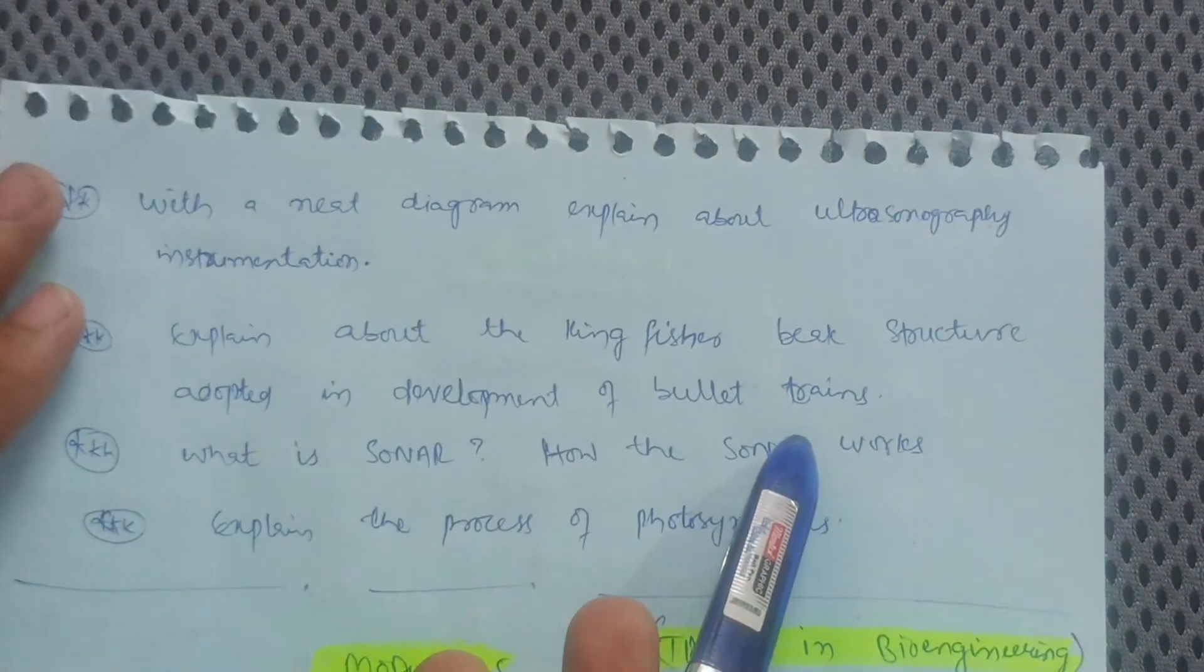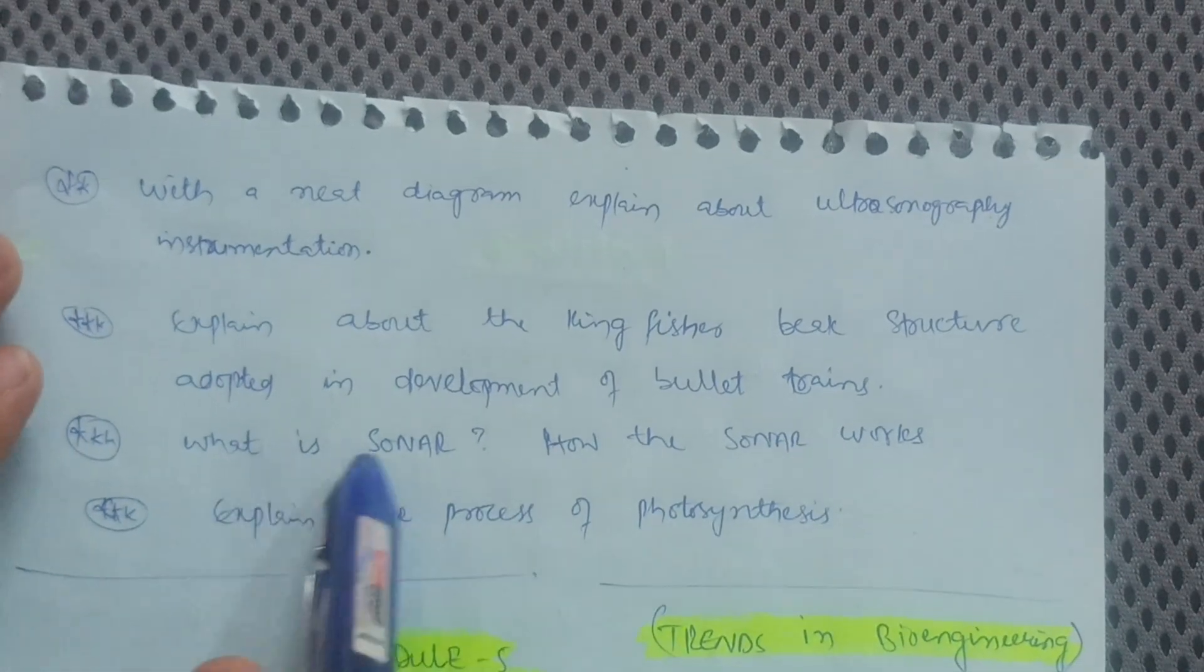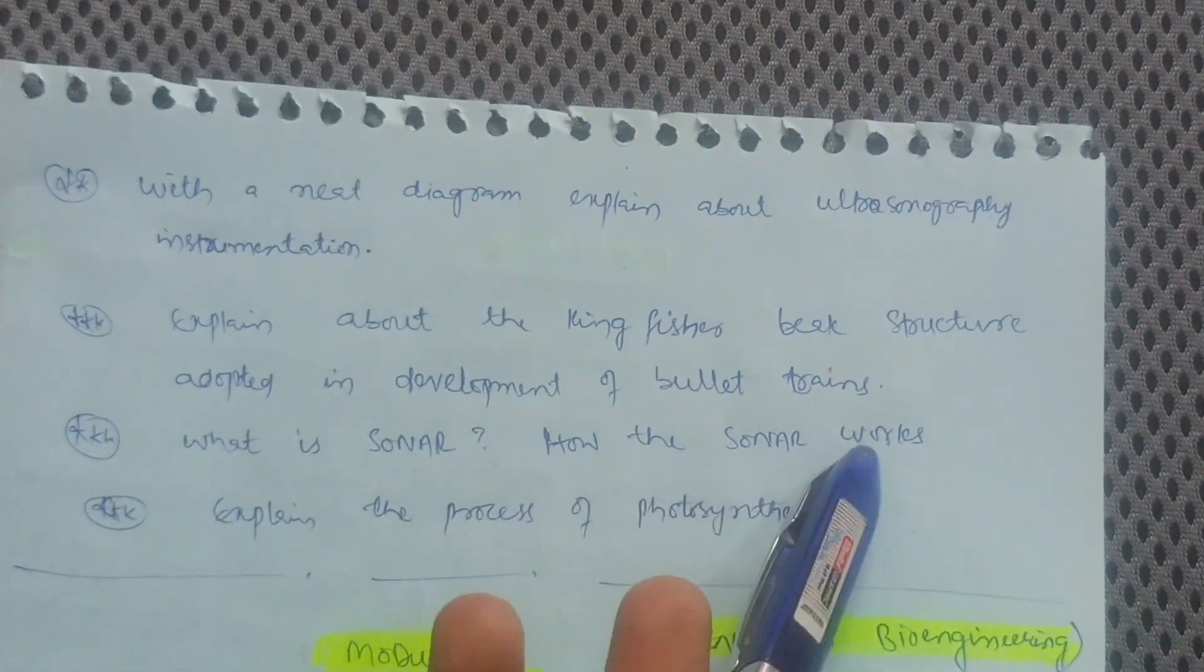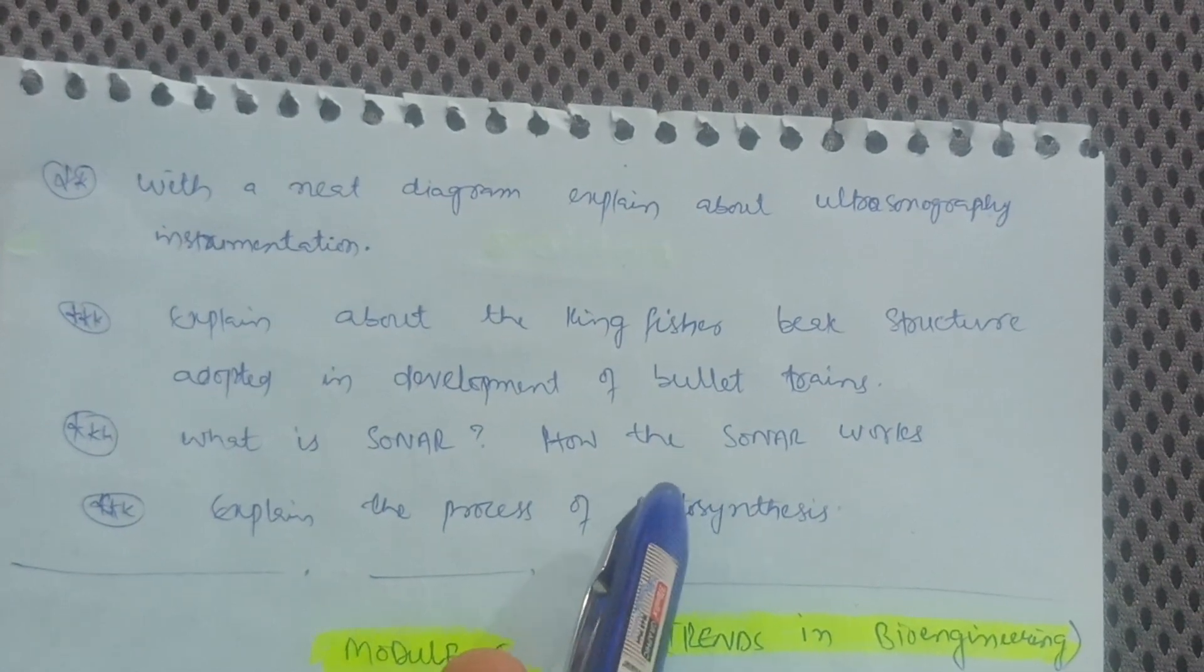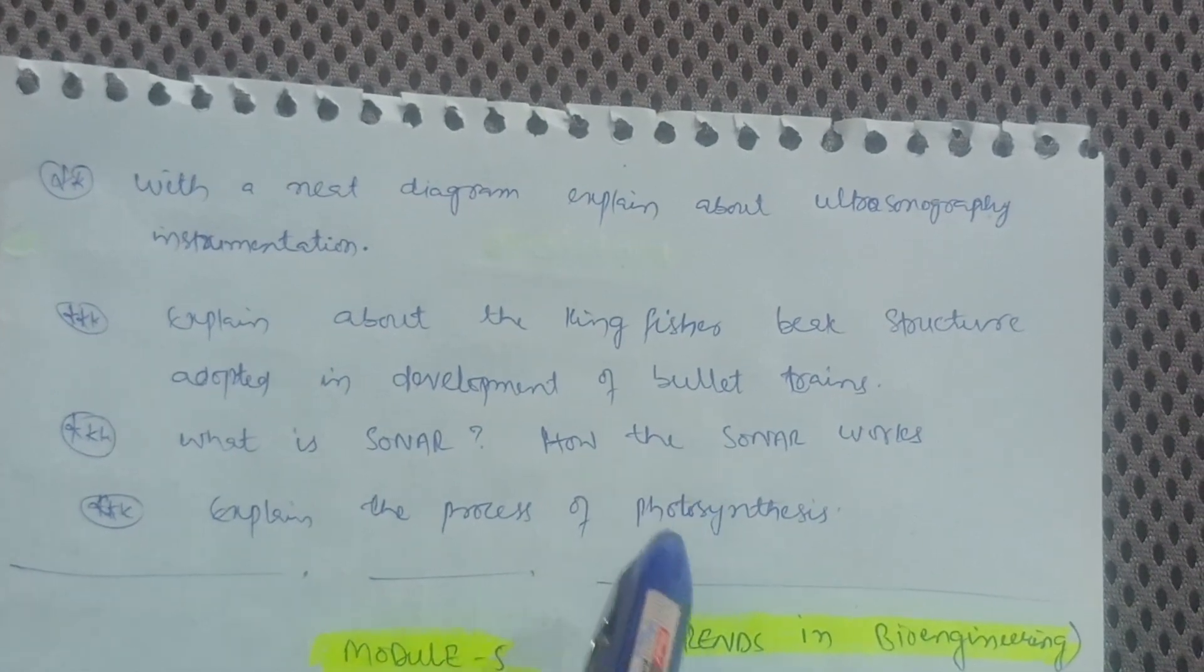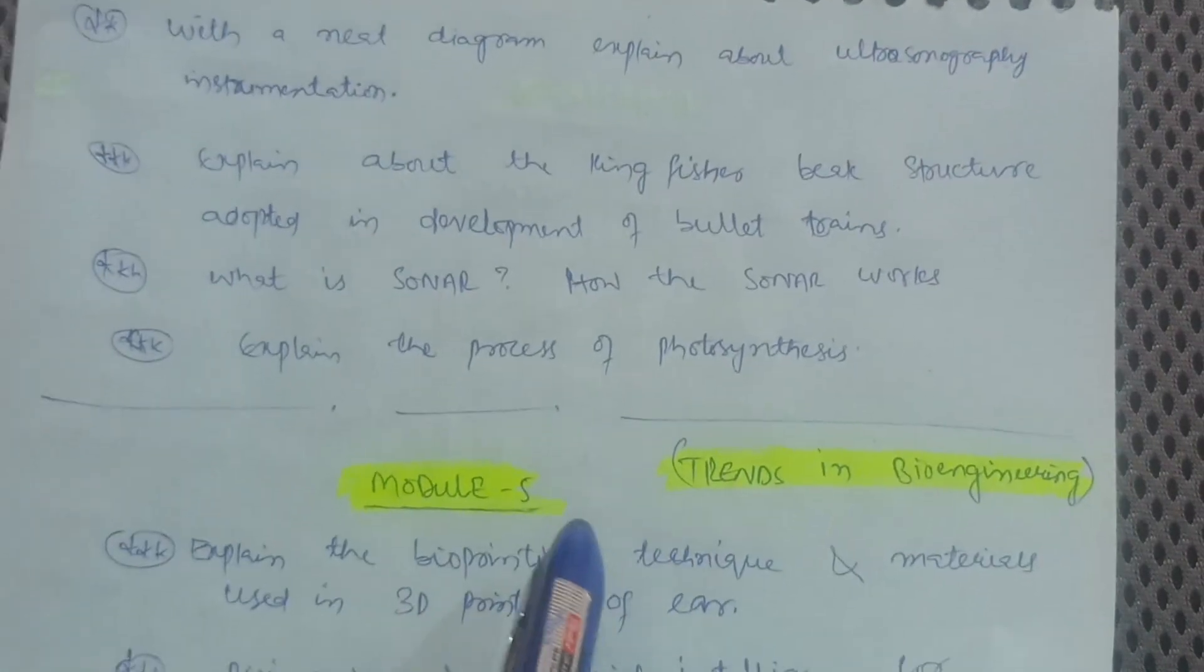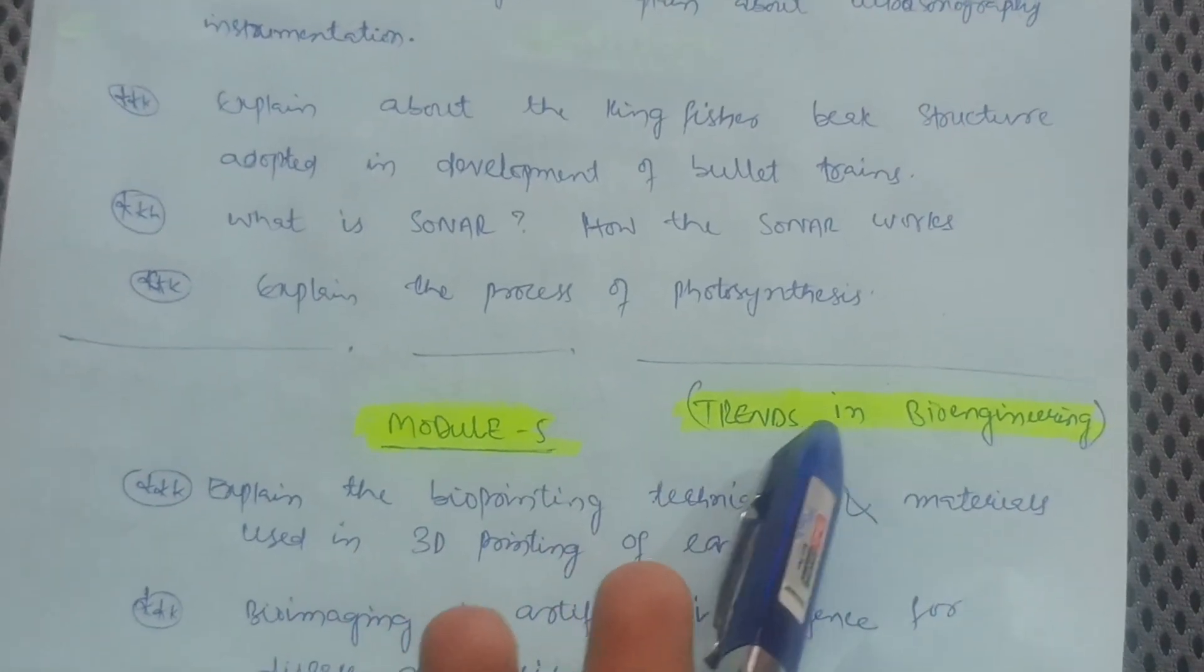This is the usage of biology for engineers. Next one is what is sonar, how the sonar works, and explain the process of photosynthesis, which I already discussed in the first question. This much content is enough for Module 4. Then let's proceed with Module 5, that is Trends in Bioengineering.